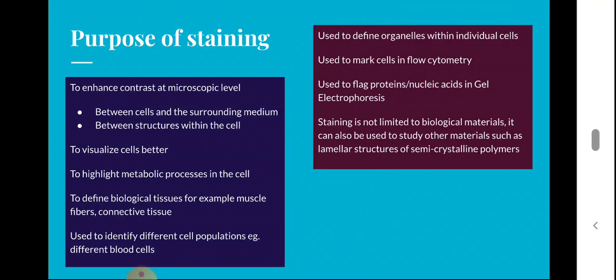The first purpose of staining is to enhance contrast at the microscopic level between cells and the surrounding medium as well as structures within the cell. The second purpose is to visualize cells better. The third is to highlight metabolic processes in the cell. The fourth is to define biological tissues — for example, muscle fibers, connective tissue, etc.